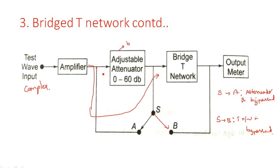When the bridge-T network is bypassed, the signal passes through the adjustable attenuator with a range of 0 to 60 dB and the output of this attenuator is passed directly to the meter. The bridge-T network is bypassed so the output is measured with all harmonics present at the output. In this way, the bridge-T network is used to suppress the fundamental frequency component and analyze the harmonics. This is the harmonic distortion analyzer.